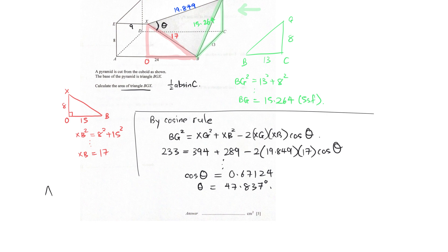So, finally, everyone, the area of the triangle BGX is half AB sine C, half times 19.849 times 17, and the sine of 47.837 degrees. That gives us the grand answer of 125 centimeters squared to 3SF. And we are done. That's worth five marks.